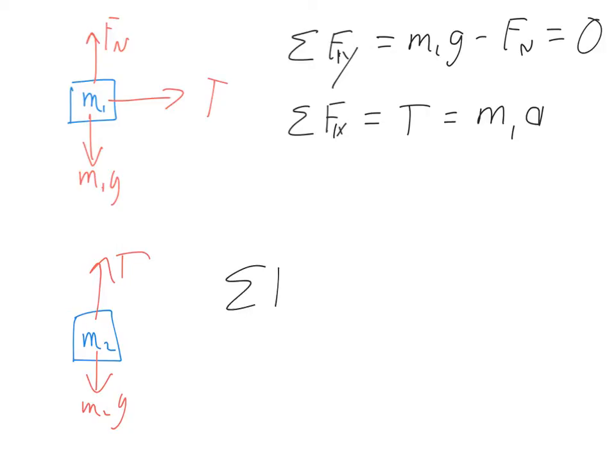So when I use sum of forces here in the y direction, I should specify this is the forces on body 2 in the y direction. So again, down is positive. So we have m2g minus the tension force equals mass 2 times acceleration.